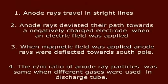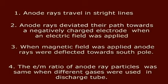1. Anode rays travel in straight lines. 2. Anode rays deviate from their path towards a negatively charged electrode when an electric field was applied.